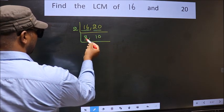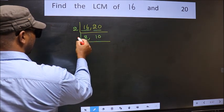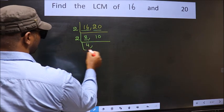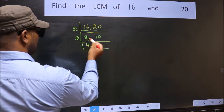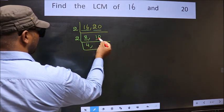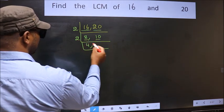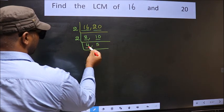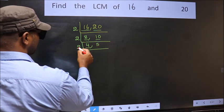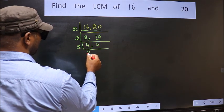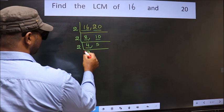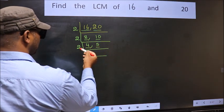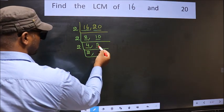Now here we have 8. 8 is 2, 4, 8 in the 2 table. The other number is 10 — when do we get 10 in the 2 table? 2, 5, 10. Now here we have 4. 4 is 2, 2 is 4.